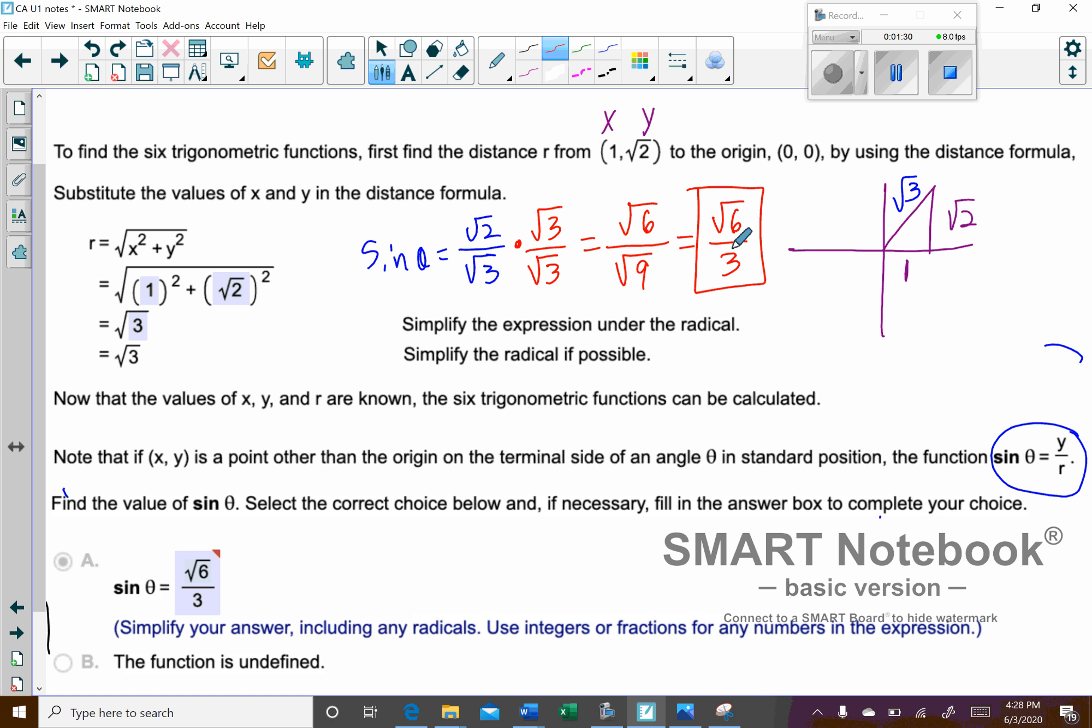But basically that's the pattern you're going to see here. Whatever that denominator radical is, you can basically multiply the top and bottom by that same value and it should simplify fairly nicely.